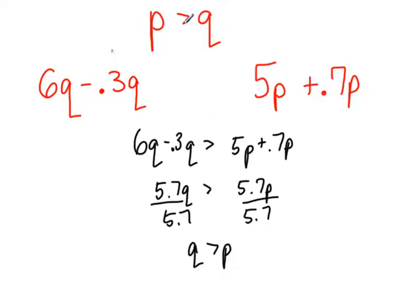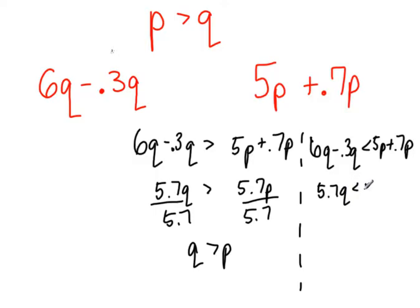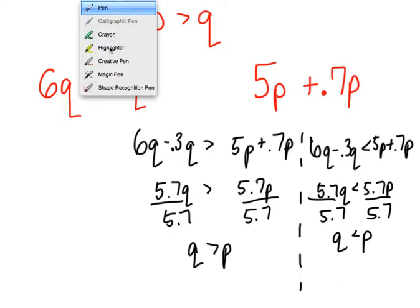Well, that is not right, because we know P is larger than Q. So I didn't guess right. Intuitively, maybe you got it correct. But again, not a big deal if you don't the first time, just reverse what you do. This is 5.7Q, and this is 5.7P. If I divide by 5.7, I get Q is less than P, which is a fact, because P is larger than Q. So this would be the correct answer.